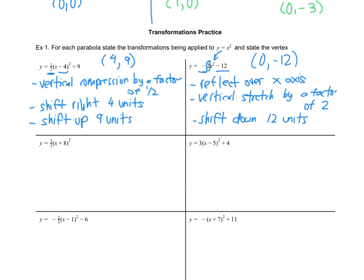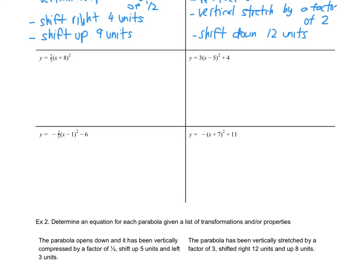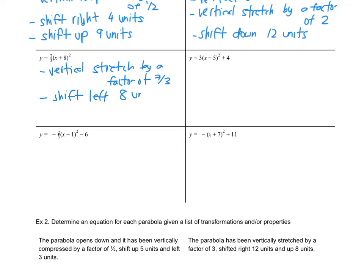One more example: y equals 7 over 3 times x plus 8 squared. You might see 7 over 3 and think it's a compression because it's a fraction, but 7 over 3 equals approximately 2.333 repeated, which is definitely greater than 1. So this is actually a vertical stretch by a factor of 7 over 3. The x plus 8 is inside the bracket, meaning shift left 8 units, making the vertex negative 8, 0.